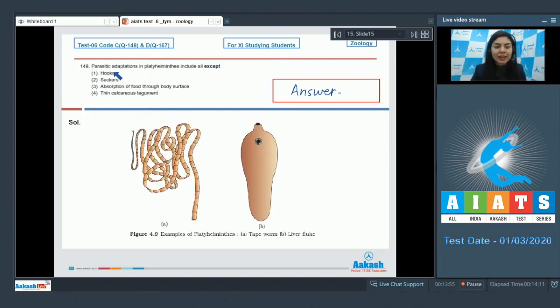Question 149. Parasitic adaptations in platyhelminthes include all except: hooks, suckers, absorption of food through body surface, or thin calcareous tegument. The parasitic flatworms, that is platyhelminthes, and this helps them to obtain nutrition from host body. Option one, hooks, is one of such adaptations because it acts as an attachment organ. Suckers in platyhelminthes help in adhesion to the host body. Option three: absorption of food through body surface. This is also right. As some of these parasites have a flat body, they directly absorb the nutrients through body surface. This is particularly seen in Taenia.